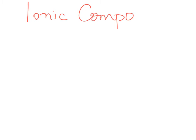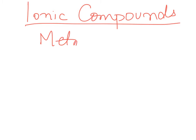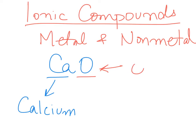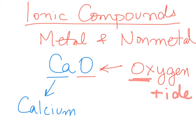A few more examples of naming ionic compounds. Remember, it has to be a compound made up of a metal and a non-metal. Let's look at CaO. The way we name it, we name the metal part first, which is calcium. Then we name the non-metal part, which is the element oxygen. We take the root and add 'IDE', so the non-metal part becomes oxide. The name becomes calcium oxide.